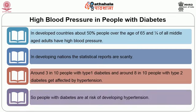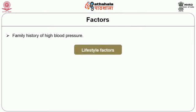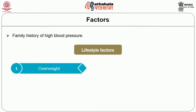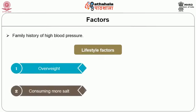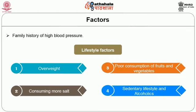People with diabetes are at risk of developing hypertension if they have the following factors: family history of high blood pressure; lifestyle factors such as overweight; consuming more salt; poor consumption of fruits and vegetables; sedentary lifestyle; and being alcoholics.